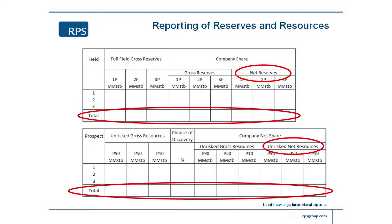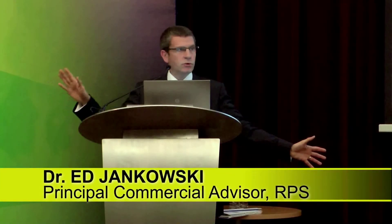I'll talk about that when we're talking about valuation of assets. So we always quote the full field so you can see the underlying asset, because that's how we define commerciality. The other side of the table, we've got what's called the company share. I'm showing here what might be called company's gross reserves and company's net reserves, and I'll explain a little bit more about that in a minute, but there's a distinction between the two. At the end of the day, the numbers that really matter, which drive the revenue of the company, will be their share of net reserves.